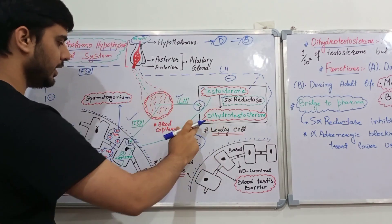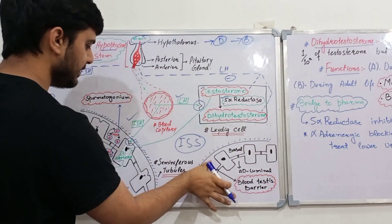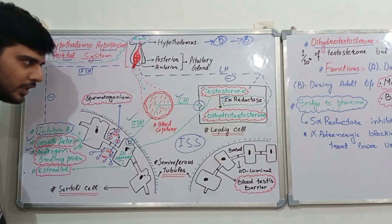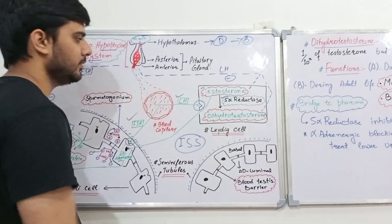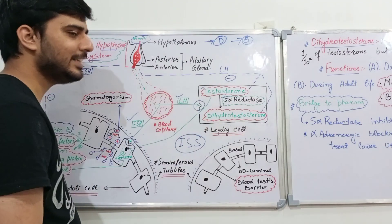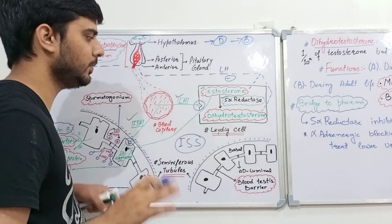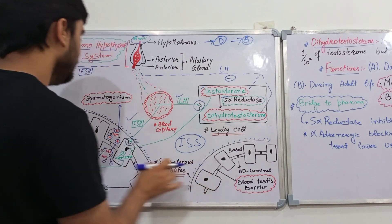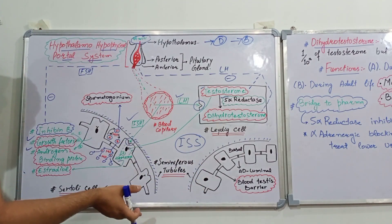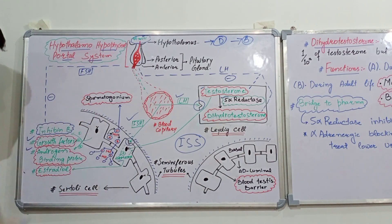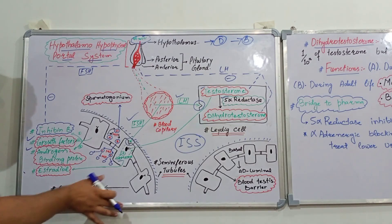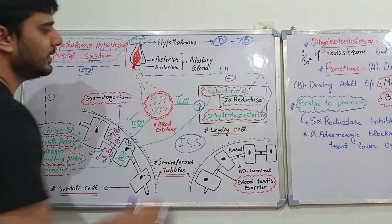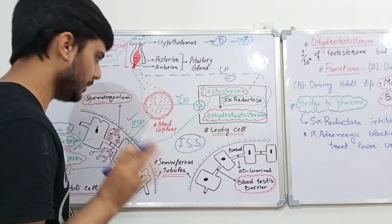The interstitial space lies between seminiferous tubules. Within the interstitial space there is a cell known as the Leydig cell, or the interstitial cell of Leydig, because they are present in the interstitial space. Within the seminiferous tubules, the lining is formed by certain cells known as Sertoli cells. So Sertoli cells form the lining of the seminiferous tubules, while Leydig cells are present within the interstitial space.